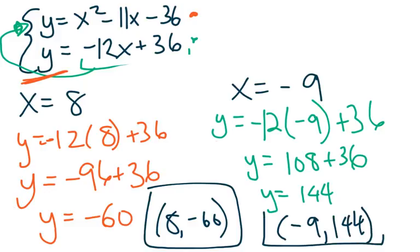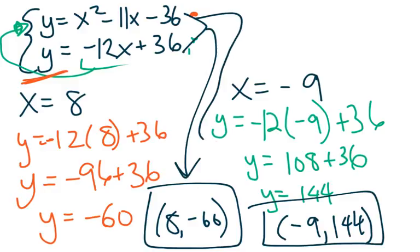So this system of solutions has two solution points to this system of linear and a quadratic solution. And those solution points are 8, negative 60, and negative 9, 144.